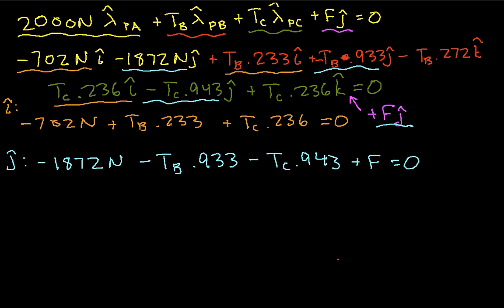We need one more color here. We'll choose an ugly green. So k-hat - we have minus TB times 0.272. And then we have plus TC, 0.236. And this is equal to 0. So again, we've gathered out each term for each of the axes and set each of those terms individually to 0.